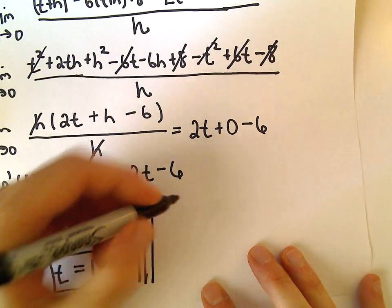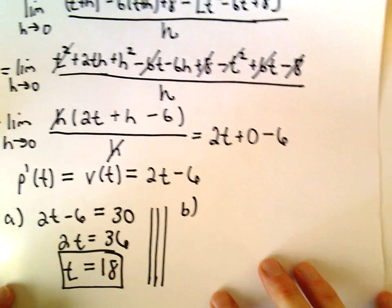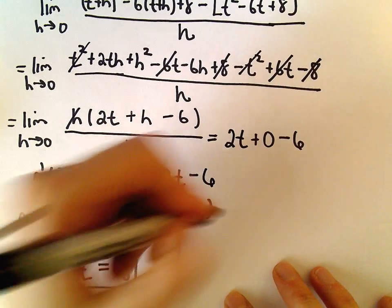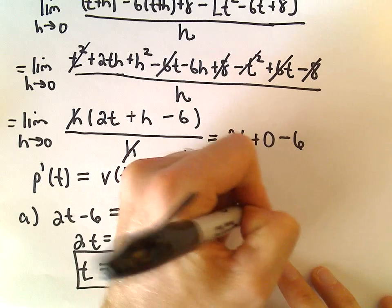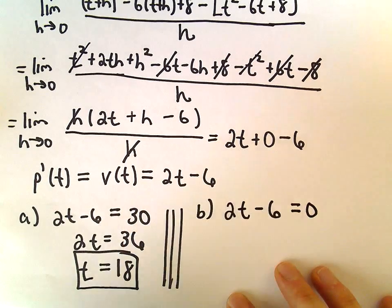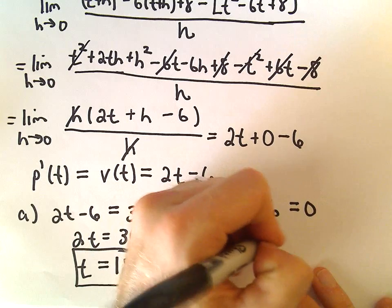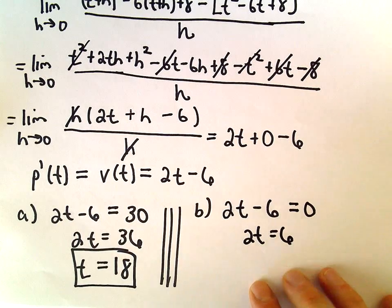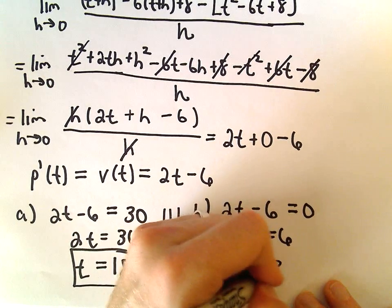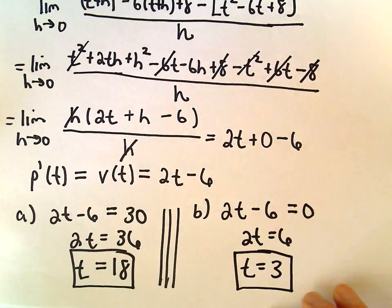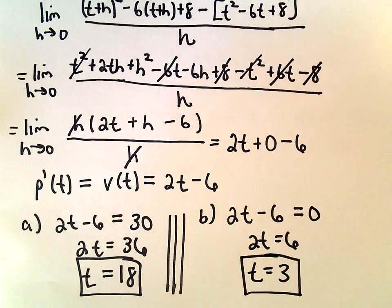For part b, if we want to figure out when the particle is at rest, well, the particle is going to be at rest when the velocity equals 0, so we can just add 6, divide both sides by 2, and we'll get t equals 3, so after 3 seconds, that's when our particle would be at rest.